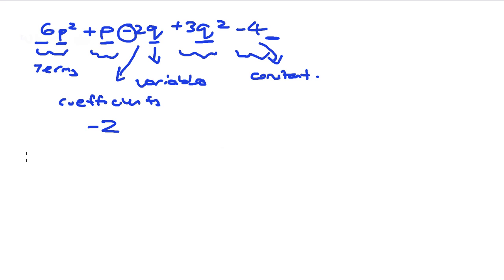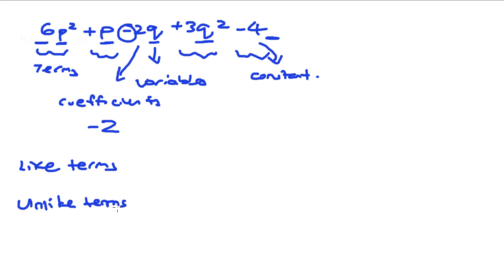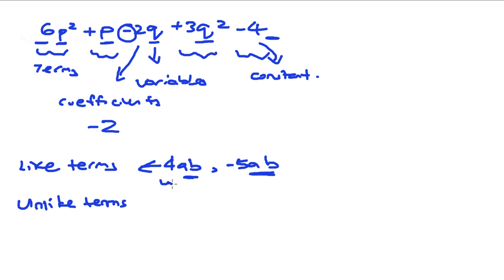There are other ways to look at terms, and one way is to differentiate between like terms and unlike terms. So how do you define like terms and unlike terms? For example, 3a²b and 4ab and minus 5ab — these are like terms, because the variable is exactly the same. The coefficient can be different, but as long as the variables are the same, they are like terms.